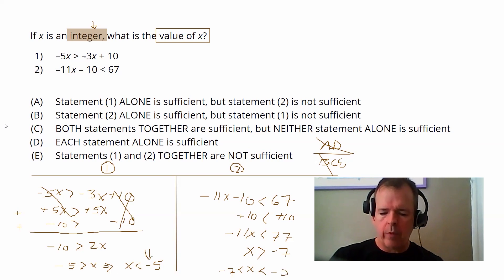And remember what we said about integers, they're those counting numbers. So it turns out that when we combine these two pieces of information together, the only possibility for our integer X is that it equals negative six. So both statements together are sufficient.